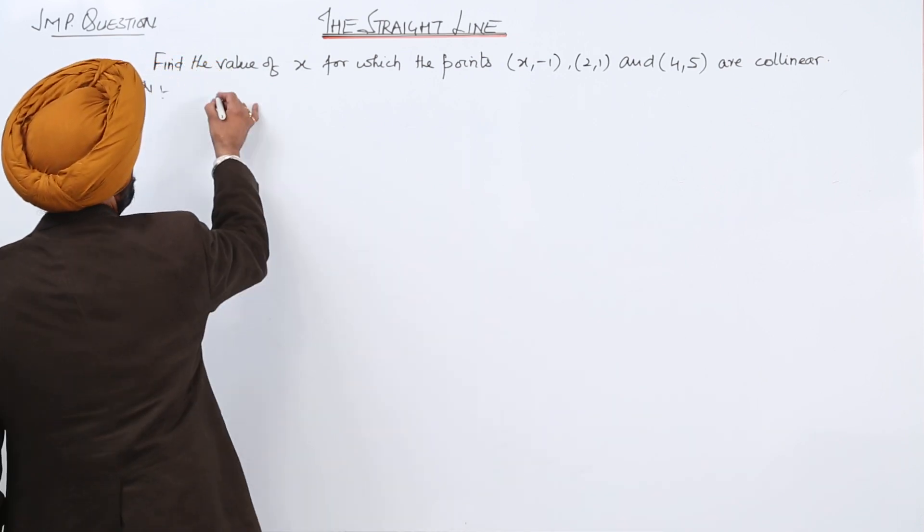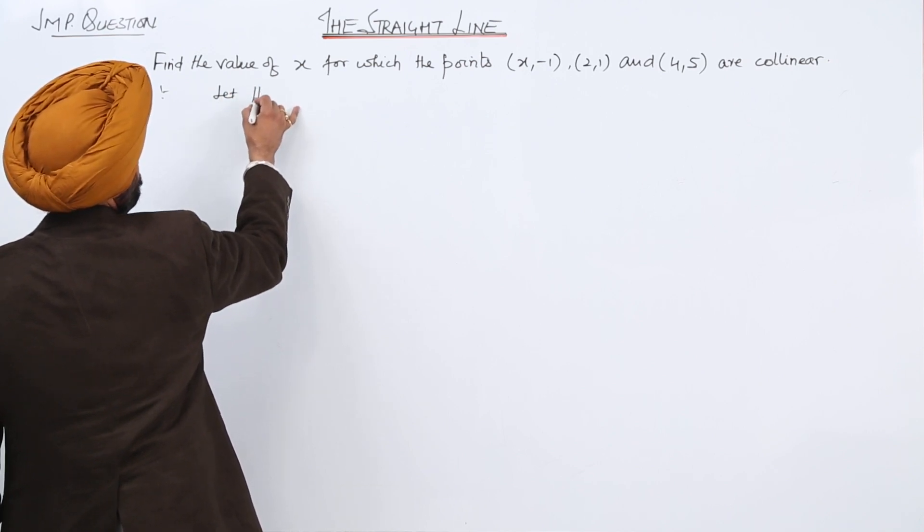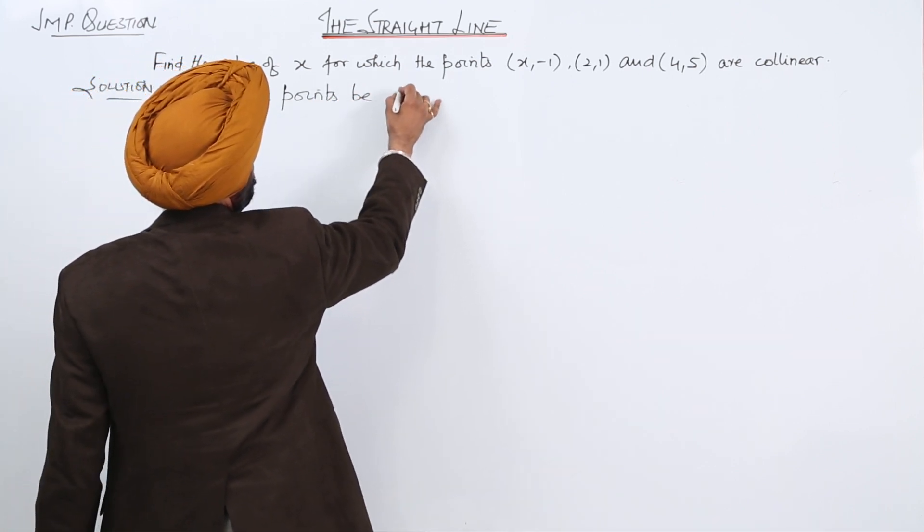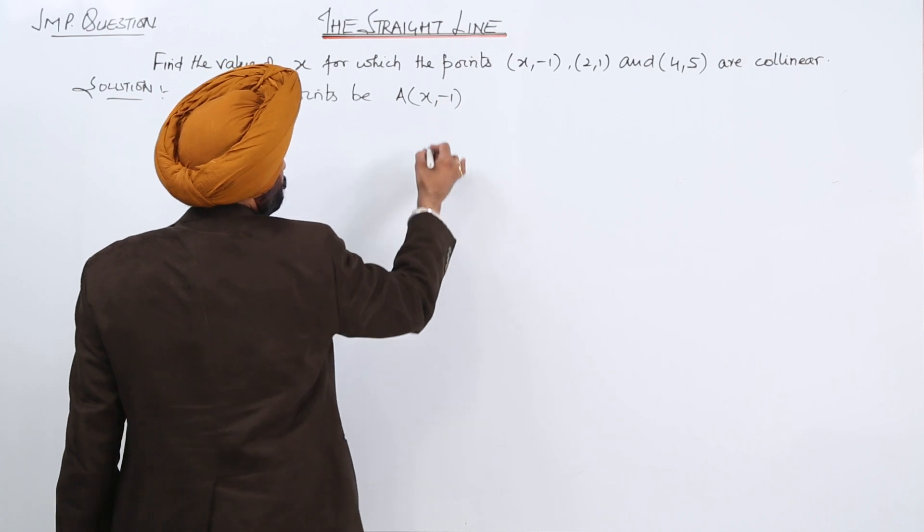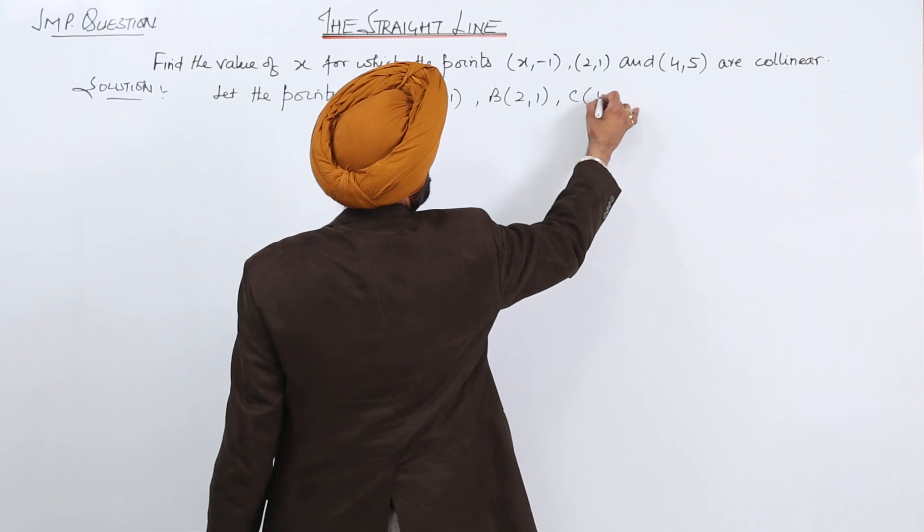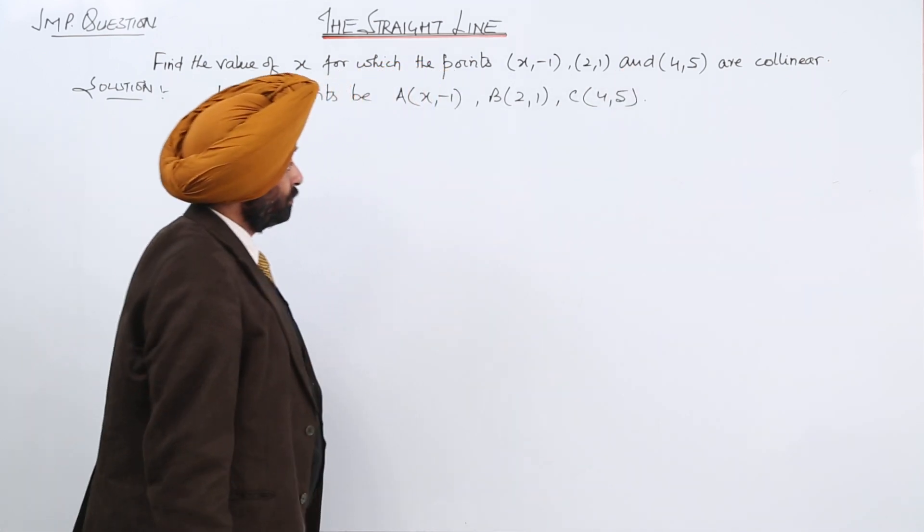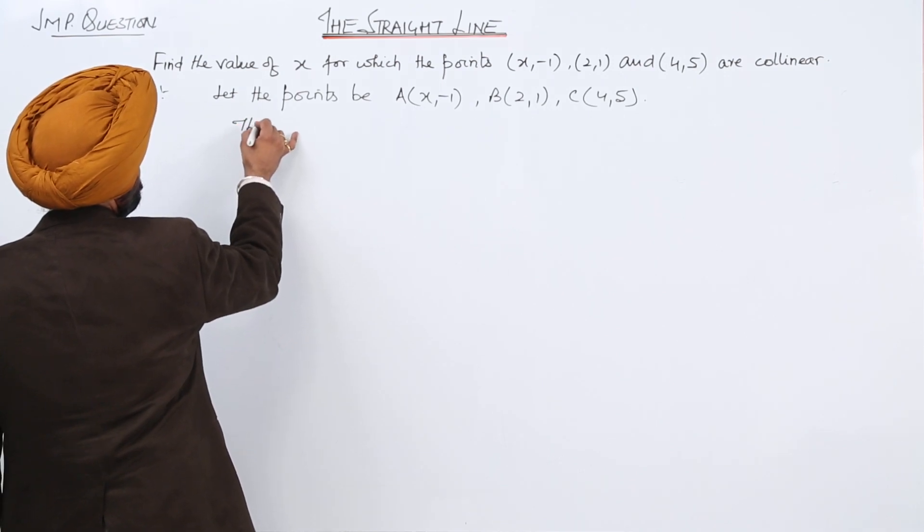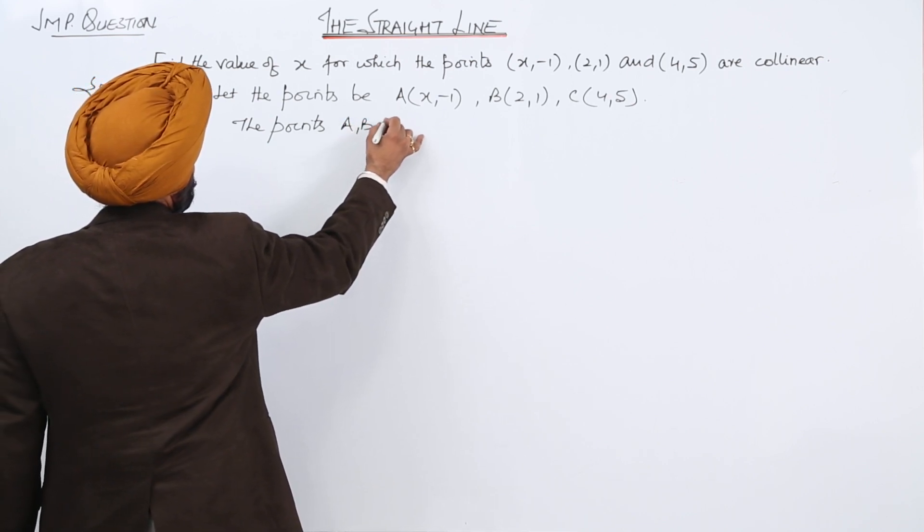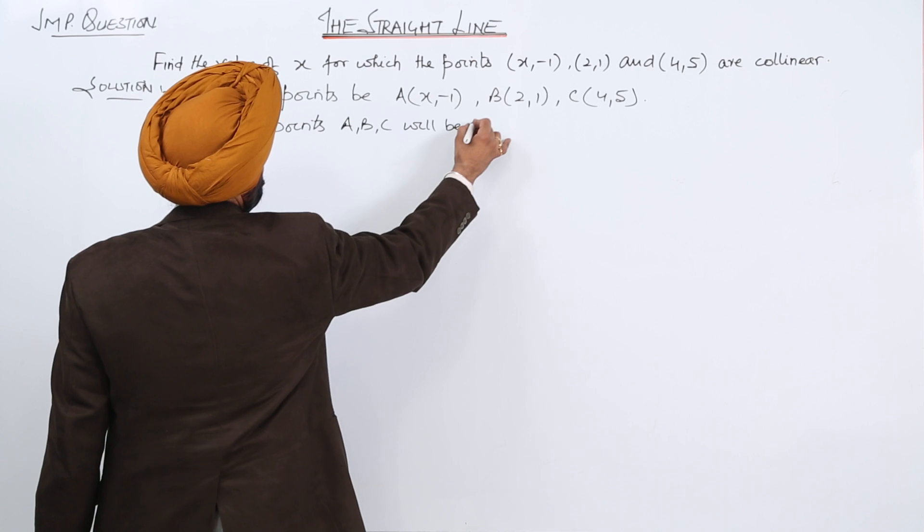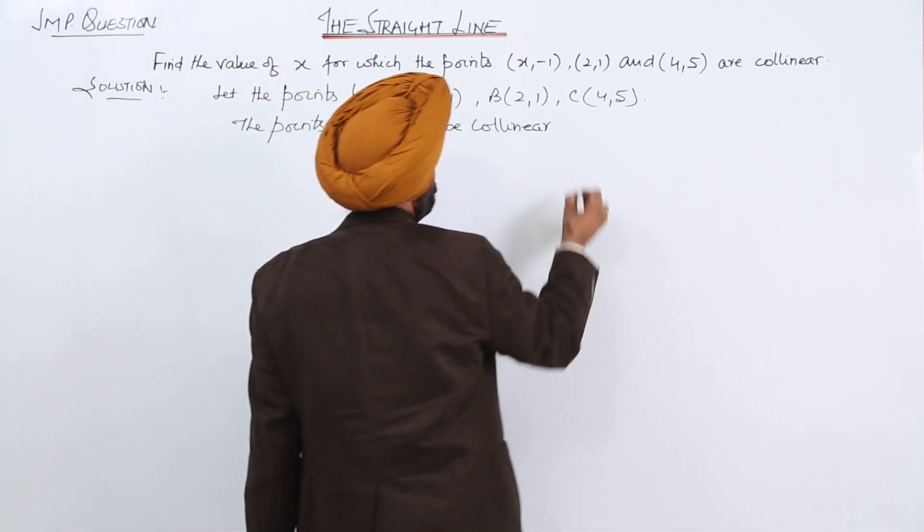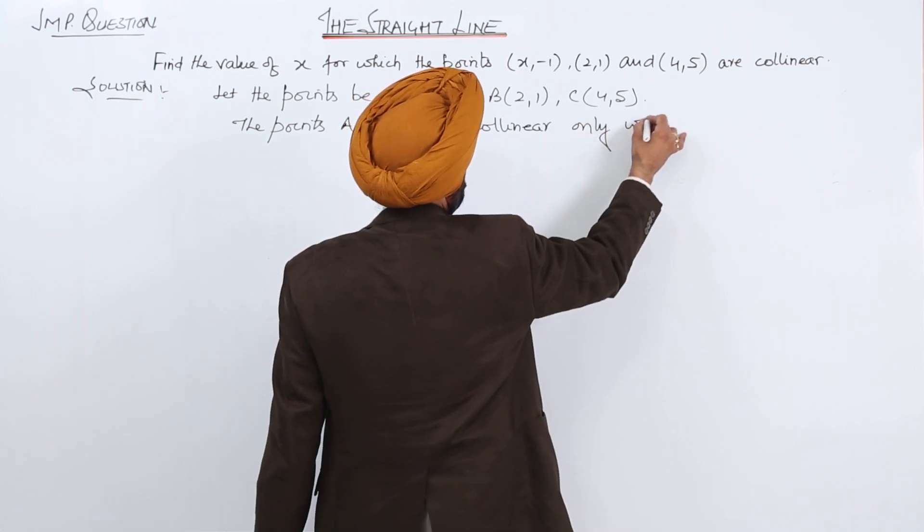Now, let the points be capital A, capital B, and capital C. Now, the points A, B, C will be collinear only when...